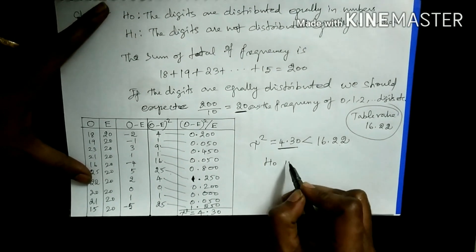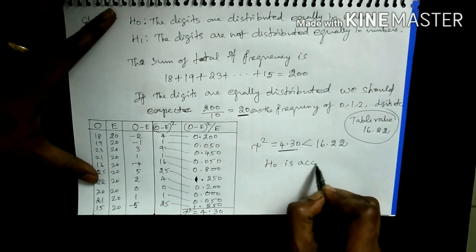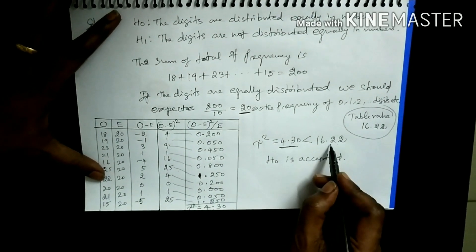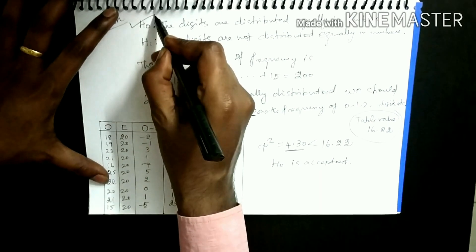Therefore, we have to accept the null hypothesis. Because this is less than the table value, we have to accept the null hypothesis.